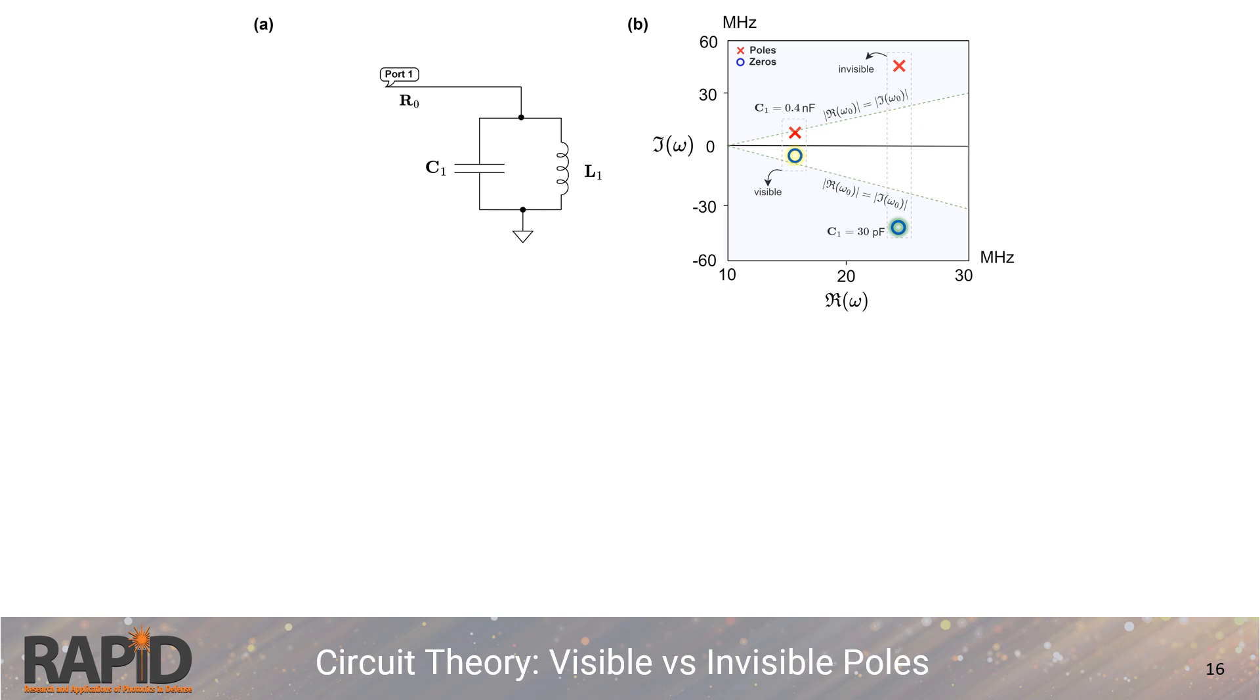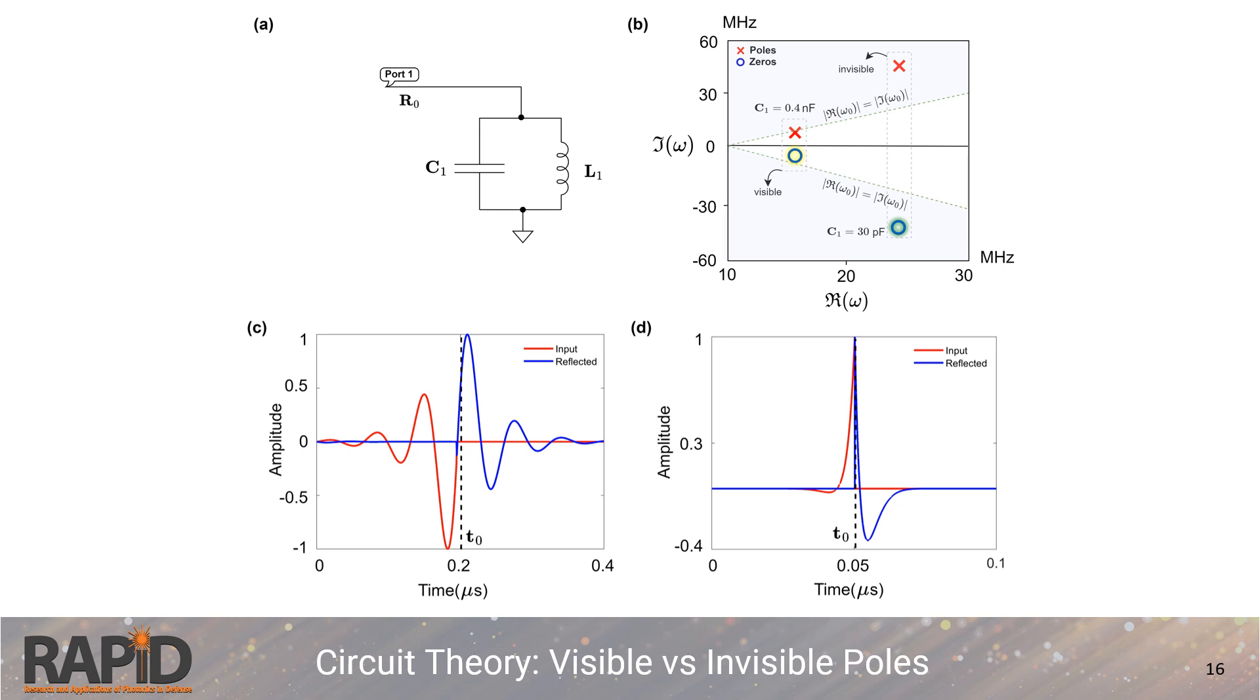Two regimes emerge here. First, when the imaginary frequency is less than the real frequency, the pole radiates an oscillating field, which can be perfectly excited by corresponding zero, like shown here. The second regime, when the imaginary frequency exceeds the real frequency, the pole's radiation dissipates faster than it can oscillate, leading to a non-oscillating radiated field. As the pole transitions where the real and imaginary frequencies are equal, its radiation behavior changes dramatically from oscillating to non-oscillating type.